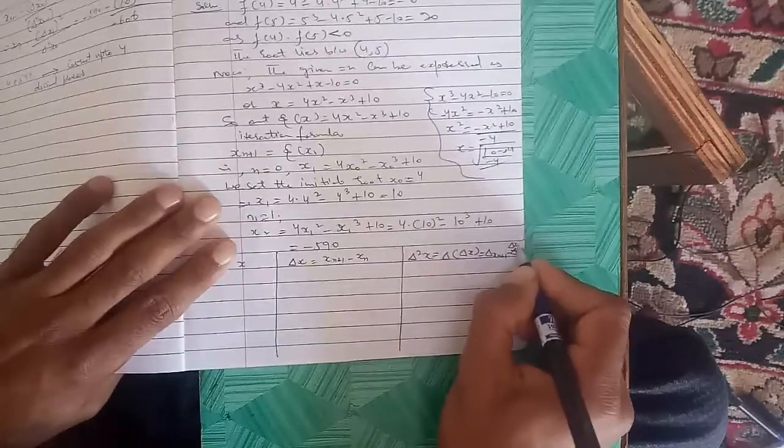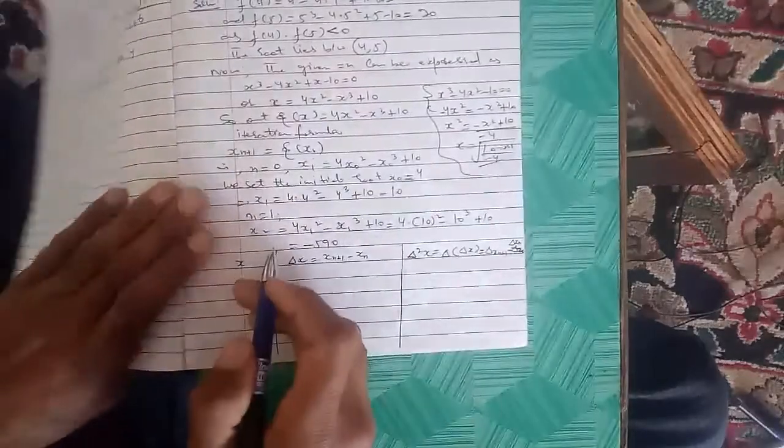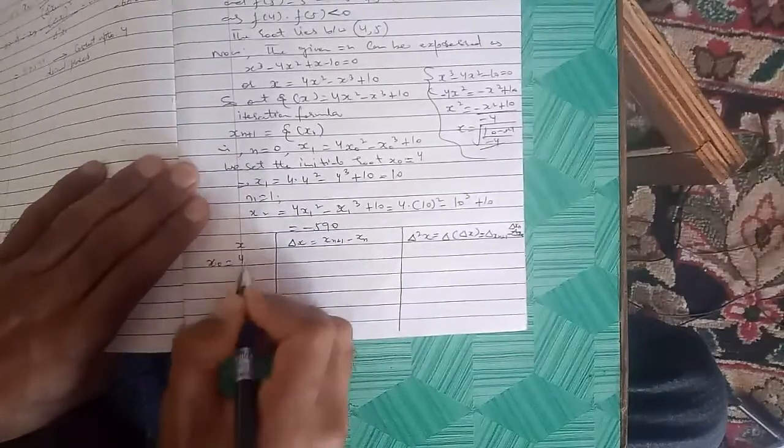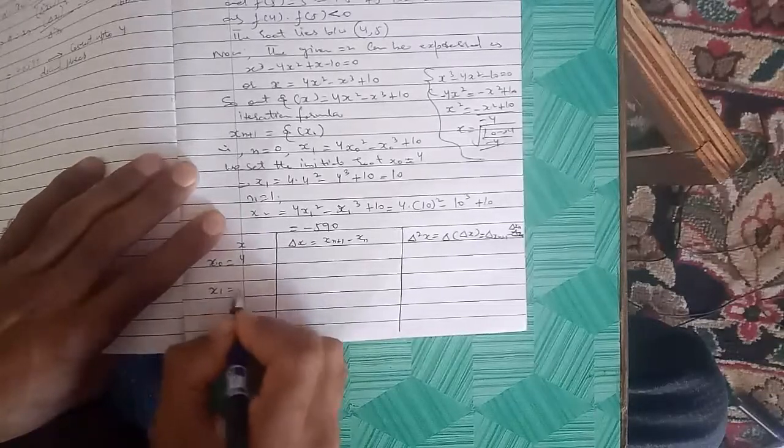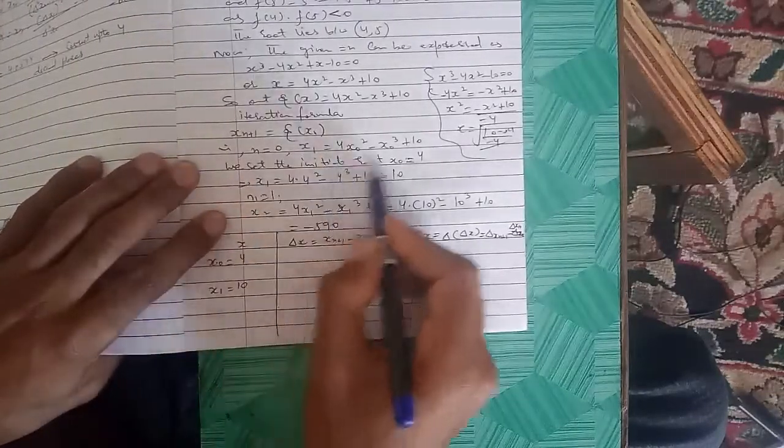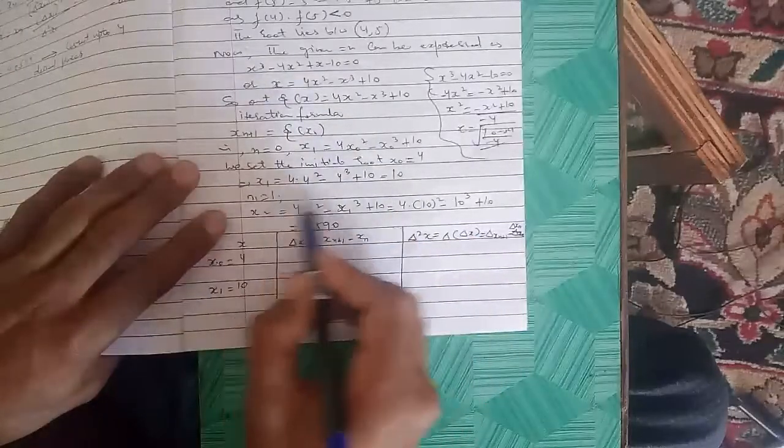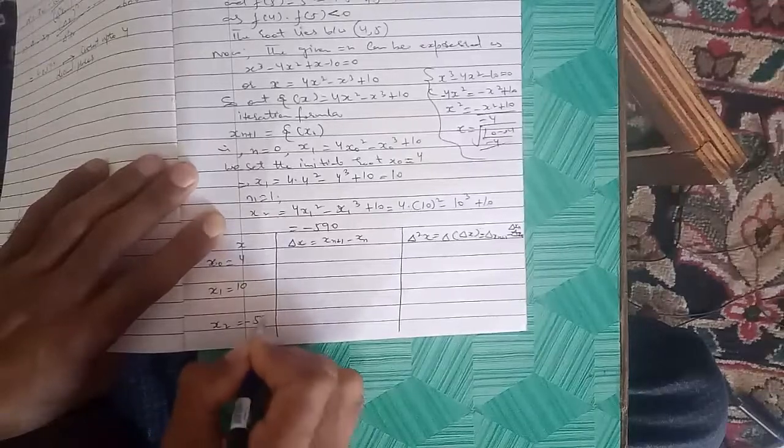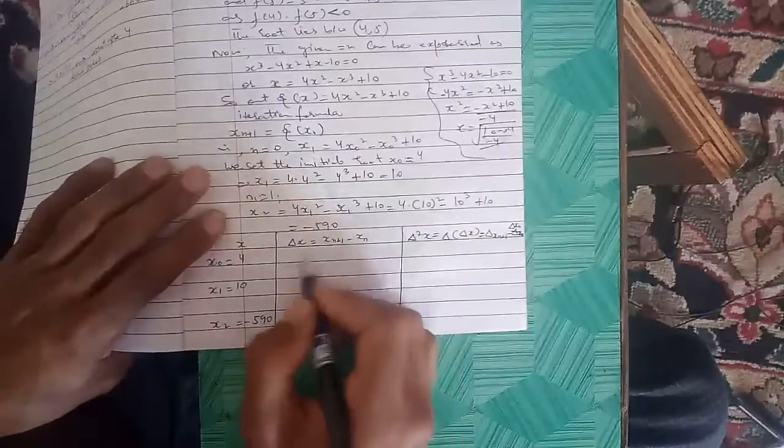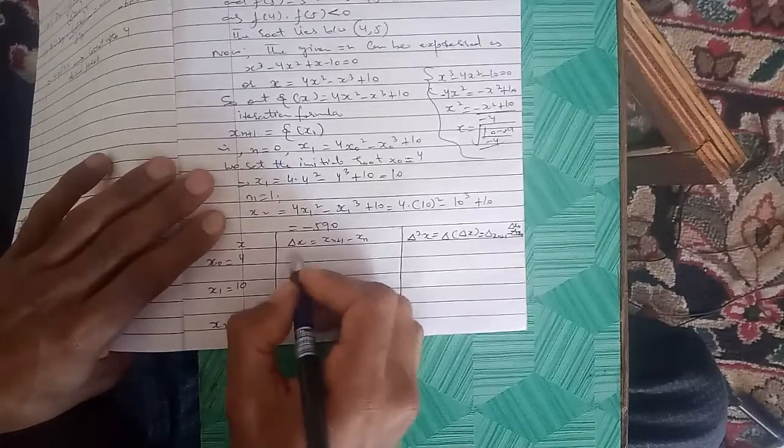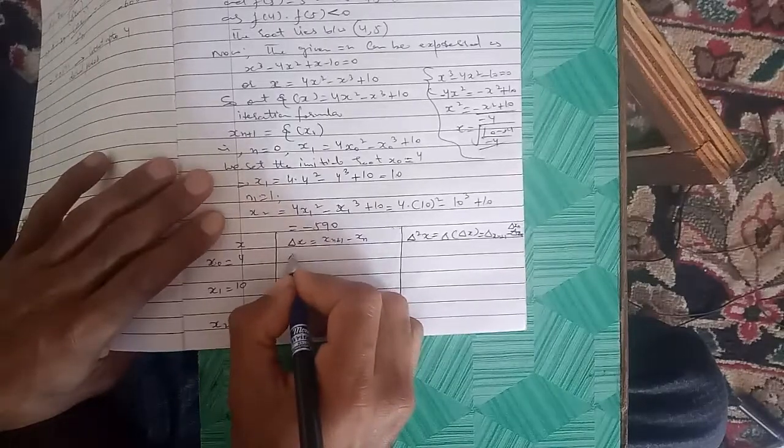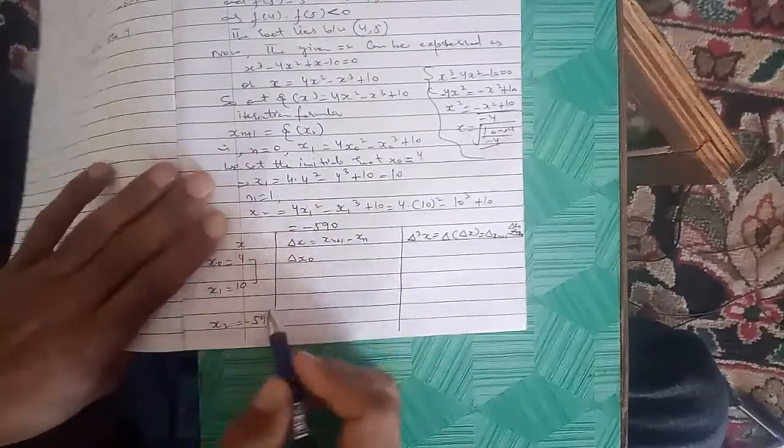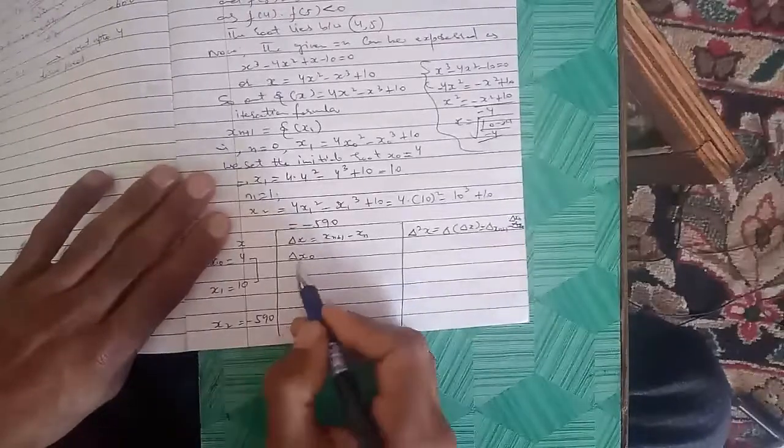So: x₀ equals 4, x₁ equals 10, and x₂ equals -590. Δx_n is the finite difference operator.